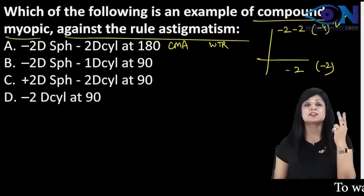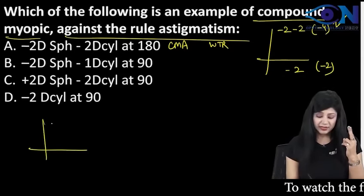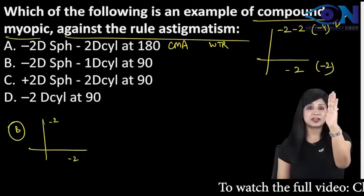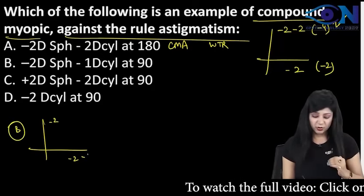Number 2: minus 2 diopter spherical. So minus 2 will act here also and minus 2 will act here also. Minus 1 you are giving vertically so it will act horizontally.